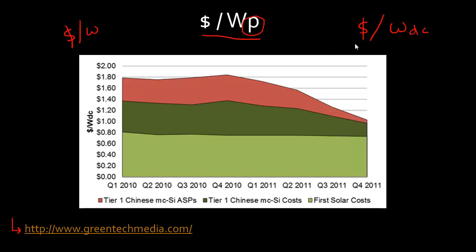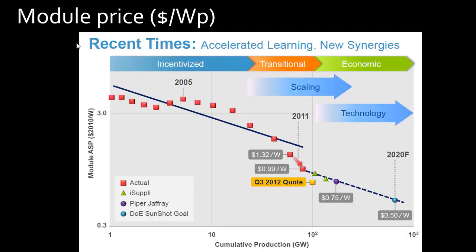What I want to do in this video is to explain what these different terms mean and why you need this unit to talk about solar panels. It's not just the newspaper or the journalist. If you look at the companies which sell these solar modules, they also report the prices. They'll report this ASP, which stands for average selling price, also in this unit which is dollar per watt.